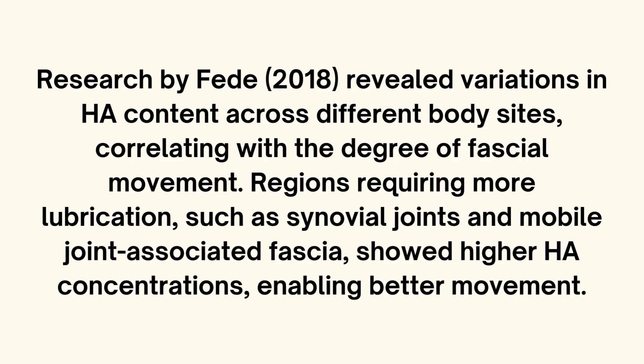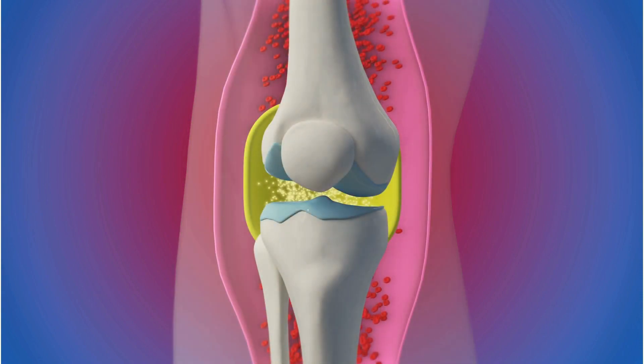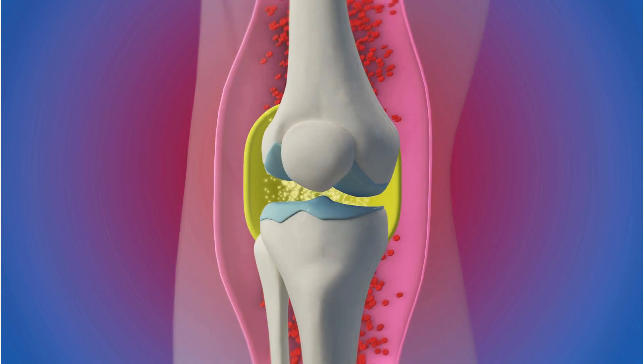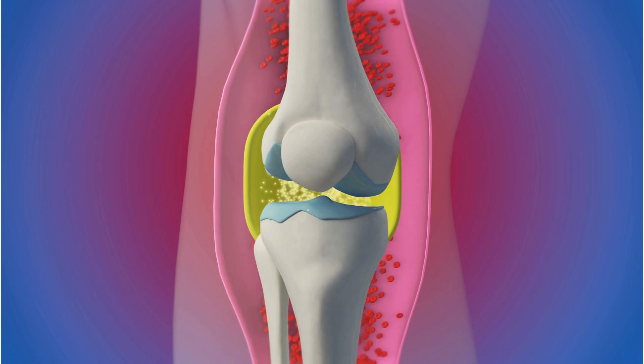In some past research, it was revealed that variations in hyaluronin content across body sites actually correlates with the degree of fascial movement. There are certain regions that require more lubrication, such as your synovial joints and mobile joint-associated fascia, and in these regions you'll have higher hyaluronin concentrations, giving you better movement.